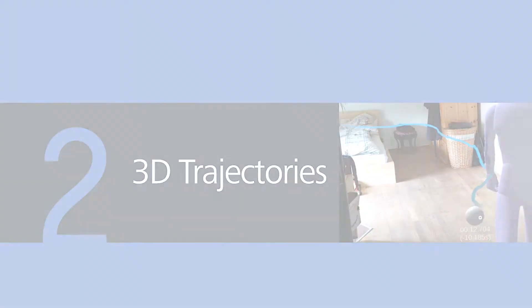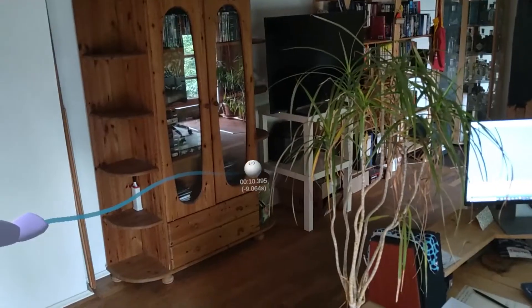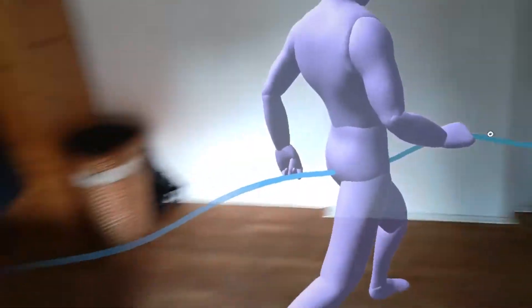3D trajectories encode the past and future movement of each person and are presented as continuous tubes, color-coded in the corresponding avatar's color. The length of the trajectory can be manipulated to different users' needs.